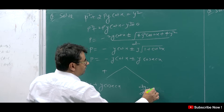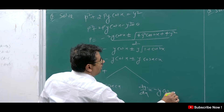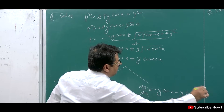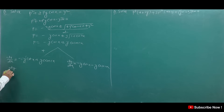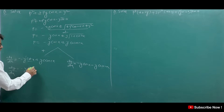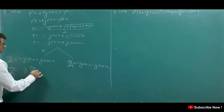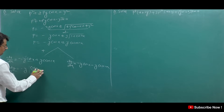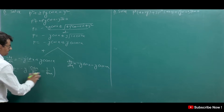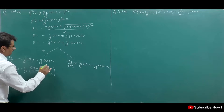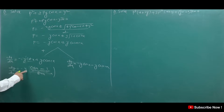We take two cases. Case 1: dy/dx = y(cot x - cosec x). Separating variables: dy/y = (cot x - cosec x)dx. Writing cot x = cos x/sin x and cosec x = 1/sin x, and taking LCM sin x, we get dy/y = (cos x - 1)/sin x · dx.